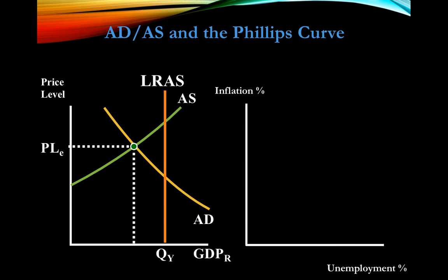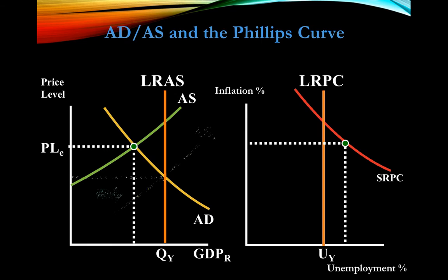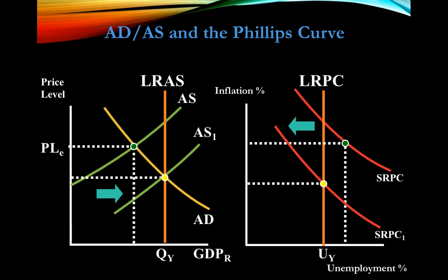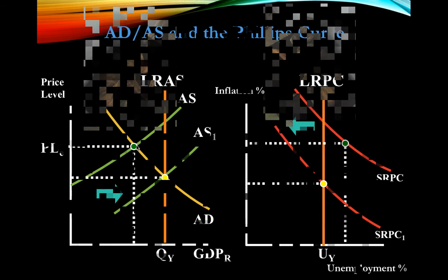We're at a recessionary gap. When we have an increase in aggregate supply, the short-run Phillips Curve shifts to the left — unemployment decreases and price level decreases as well. Once again, the two graphs work as a mirror image.